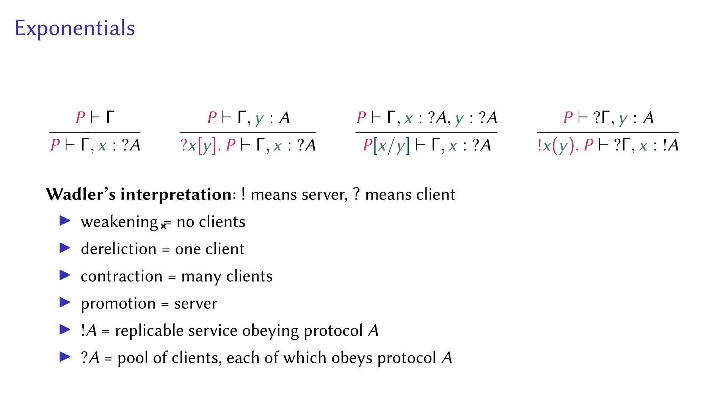The weakening rule represents constructing an empty client pool from nothing. The dereliction rule is constructing a singleton client pool from only one client. The contraction rule is merging two client pools into one client pool. Promotion is producing a replicative server from a process that will be replicated.